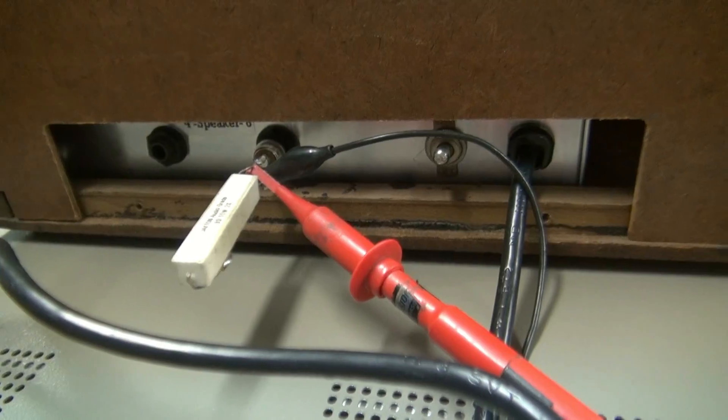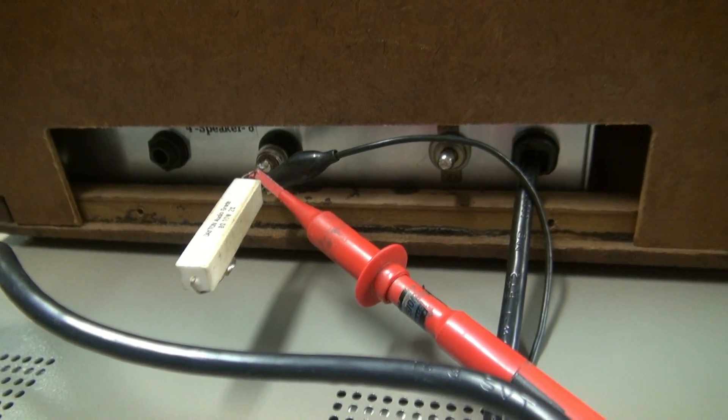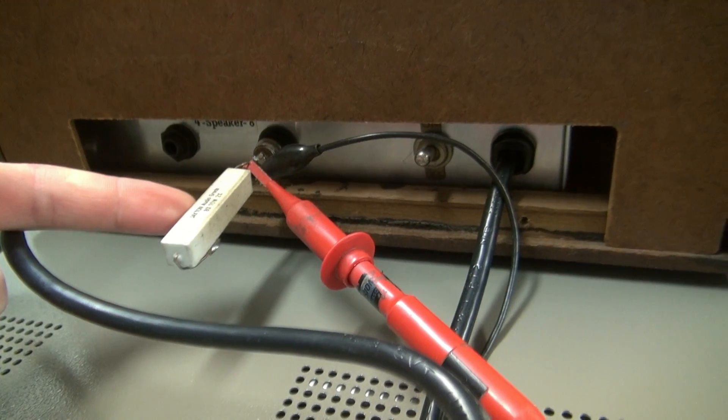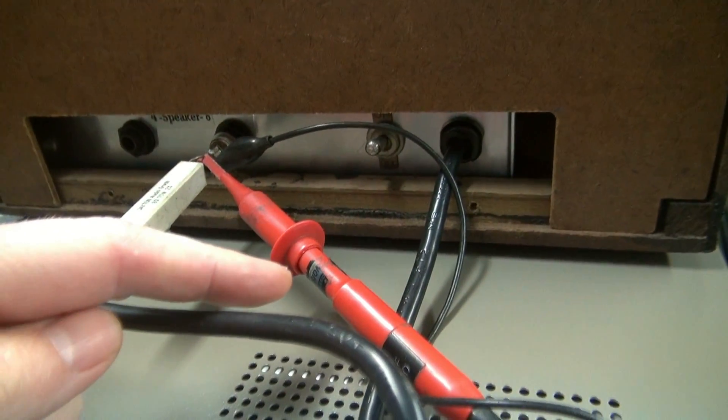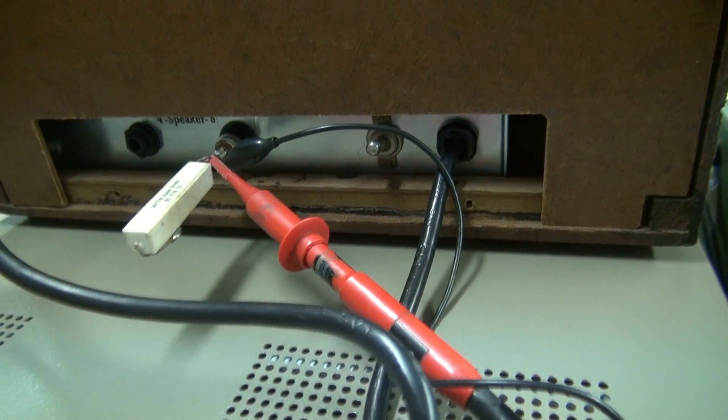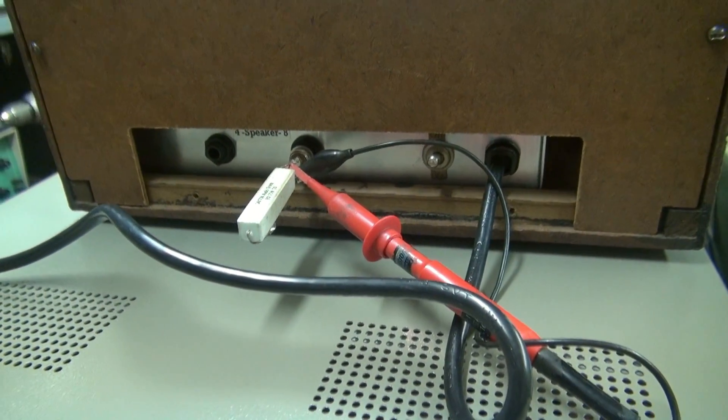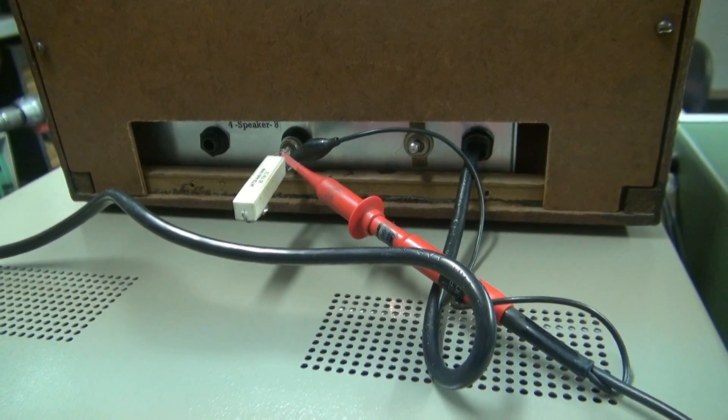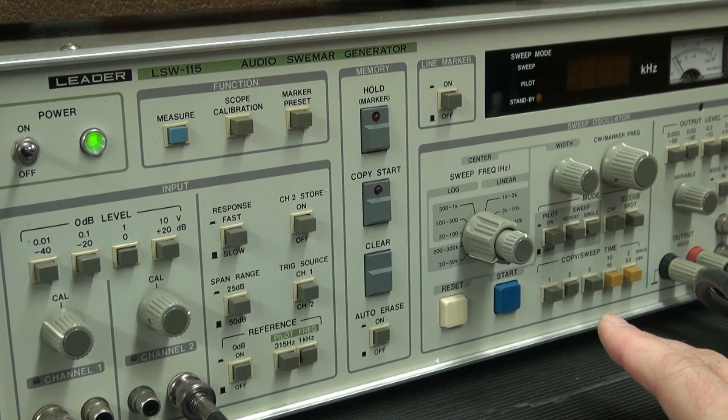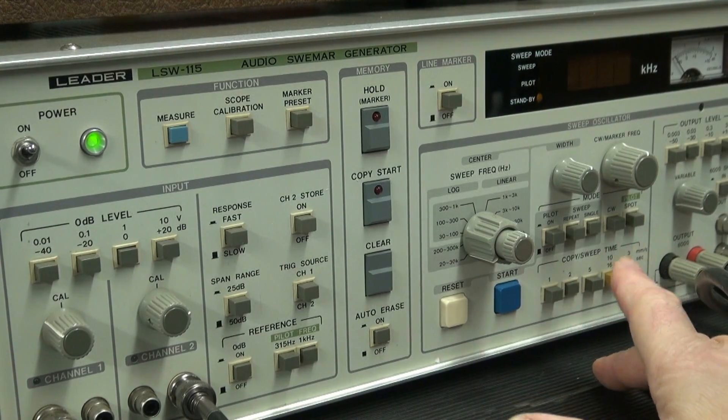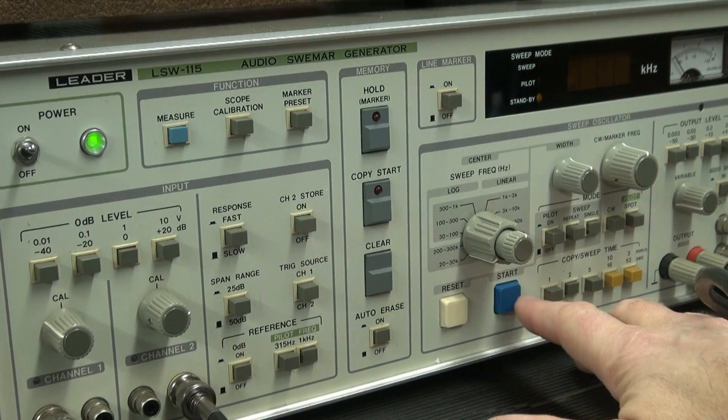So let's do a sweep. This is the output of the amplifier. For this test, I have a dummy load. I'm using a x10 probe that goes to the scope. And of course, the input goes to the front of the amp like any other signal would, such as from your guitar. To start your sweep, after you've set your output level, you set your speed and you hit start.